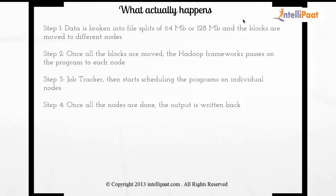Once you give data — let's say 640 MB — the data is broken into input splits of 64 MB to 128 MB and the blocks are moved to different nodes. Once all the blocks are moved, the Hadoop framework passes the program to each node. The JobTracker then starts scheduling the programs on individual nodes, and once all the nodes are done, the output is returned back. This is how Hadoop typically works.